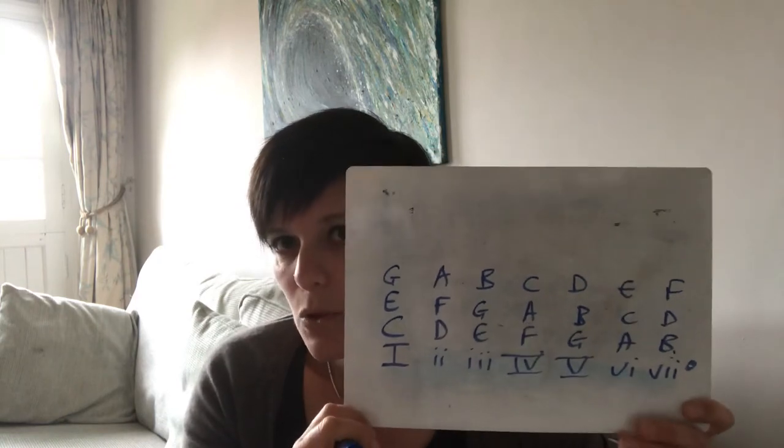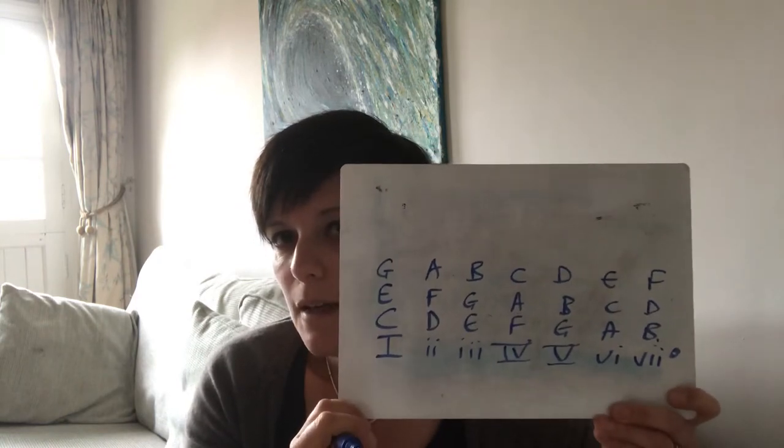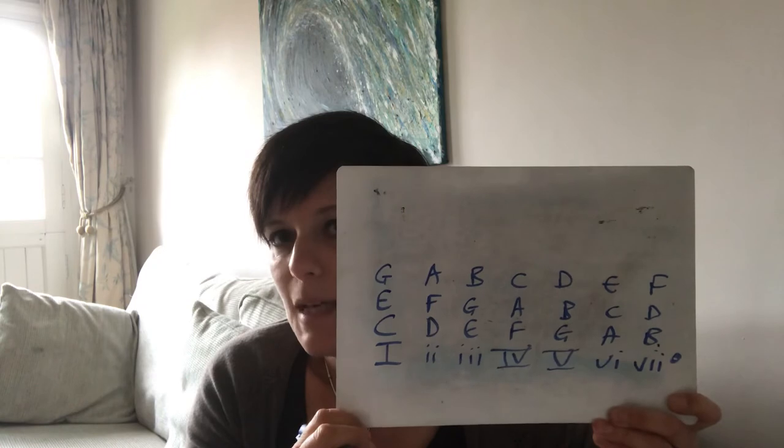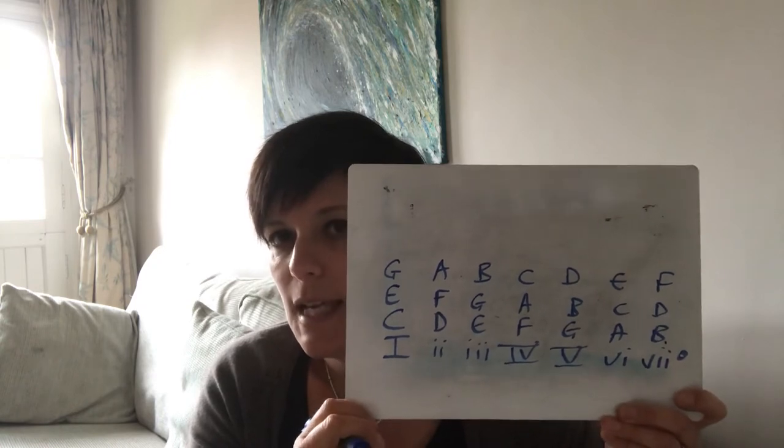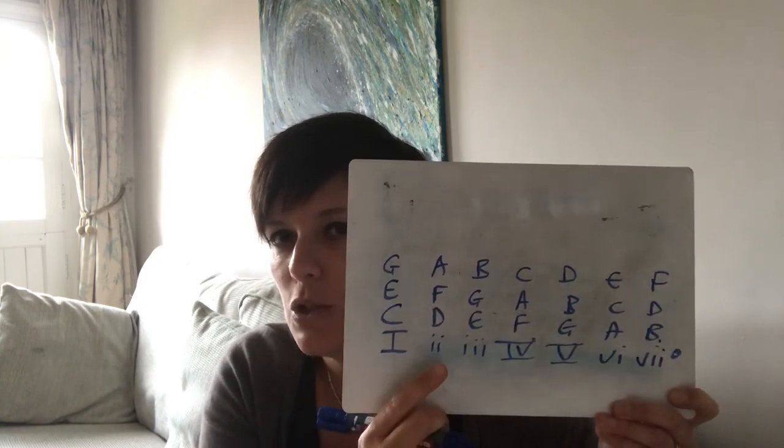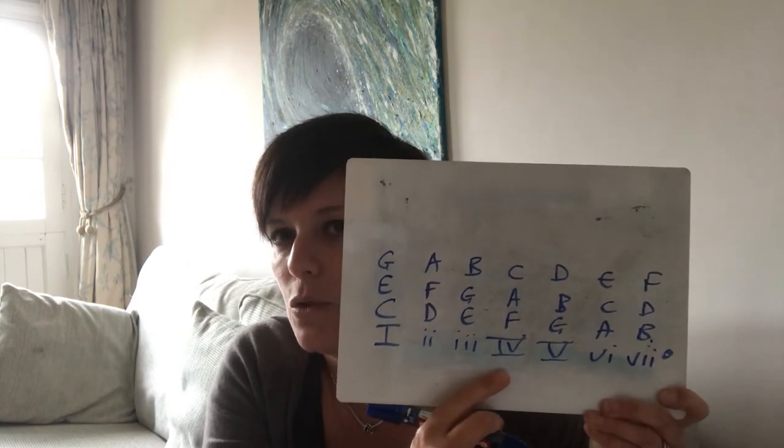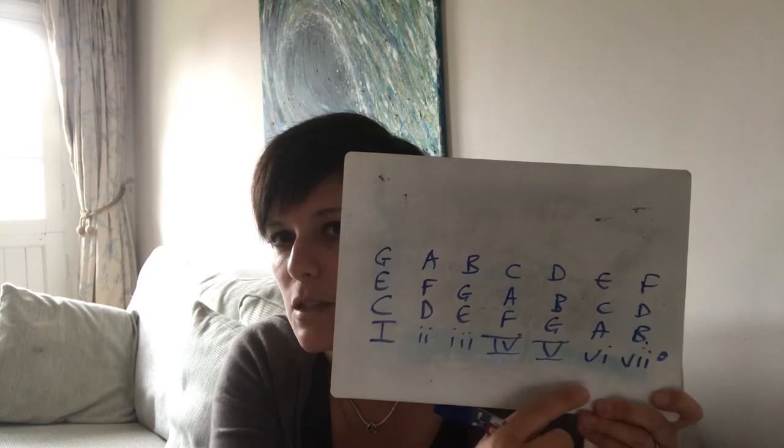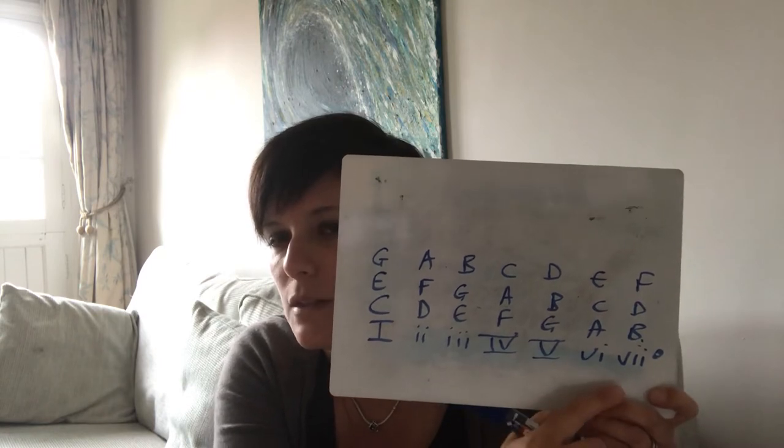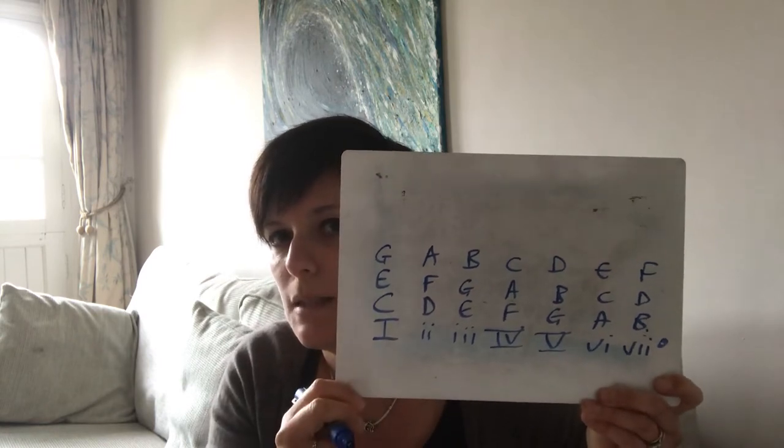So now we've ended up with all of the notes in the chords, every chord of C major. So C major's key has chord 1 which is C major, chord 2 which is D minor, chord 3 E minor, chord 4 F major, chord 5 G major, chord 6 A minor and chord 7 which is diminished, B diminished.